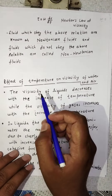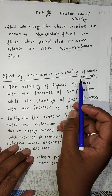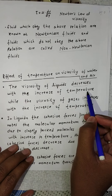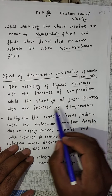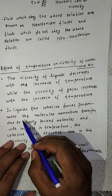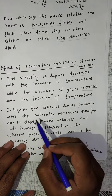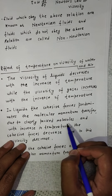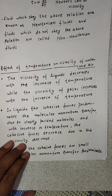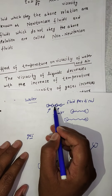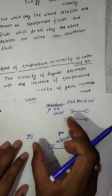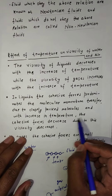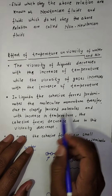So to summarize the effect of temperature on viscosity of water and air: the viscosity of liquids decreases with increasing temperature, while the viscosity of gases increases with increasing temperature. This is because in liquids, cohesive forces are predominant and molecular momentum transfer is less due to closely packed molecules.